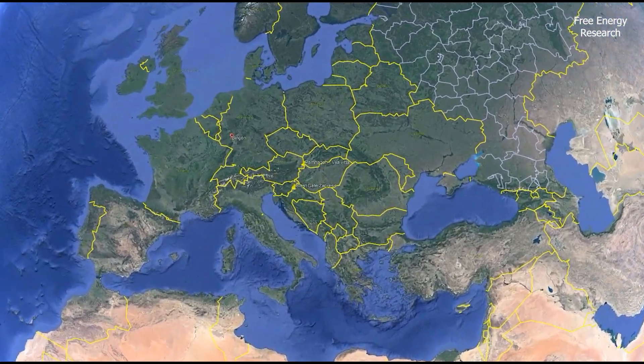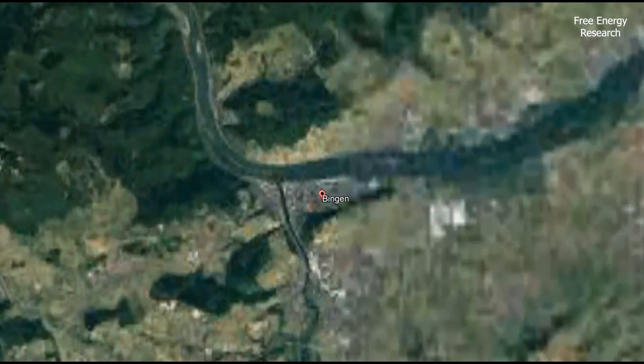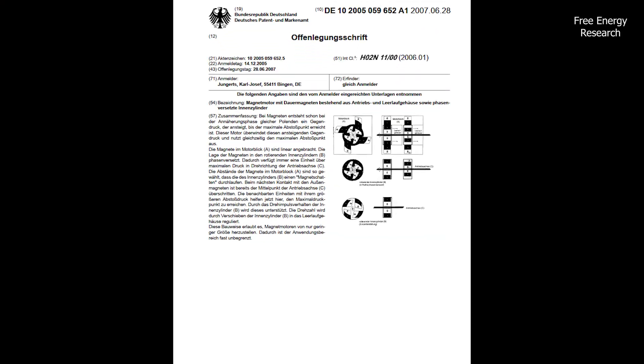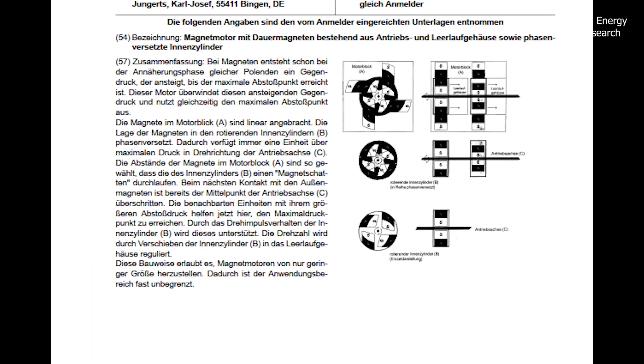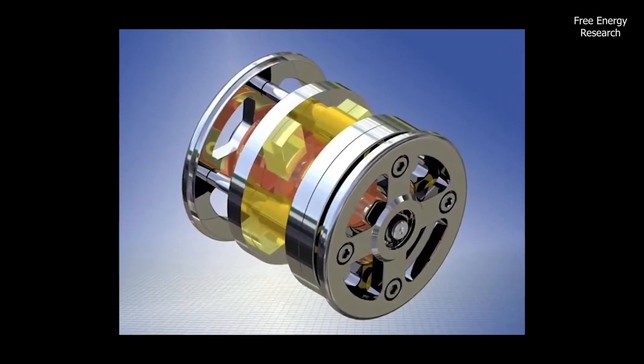The patent for the magnet motor described above originates from Germany and is attributed to inventor Carl Jungertz from the city of Bingen. The official name of the motor is magnetic motor with permanent magnets consisting of drive and idler housing and phase-shifted inner cylinder. The patent application was submitted back in 2005.